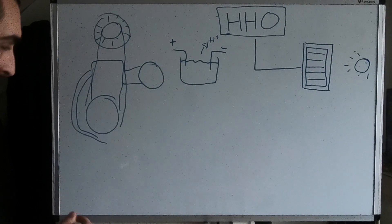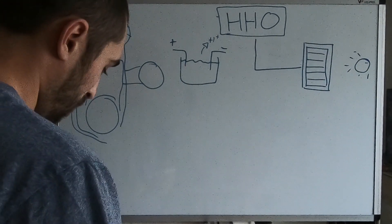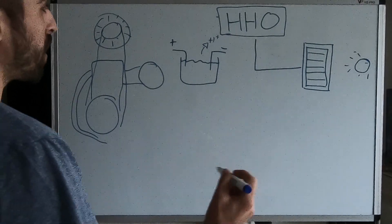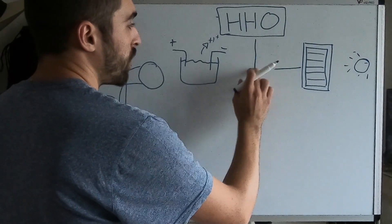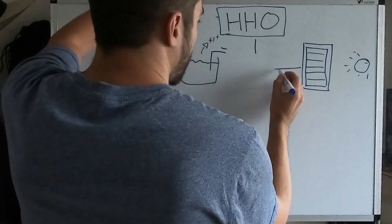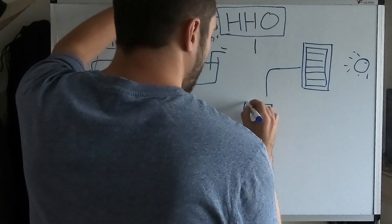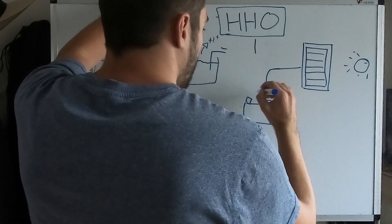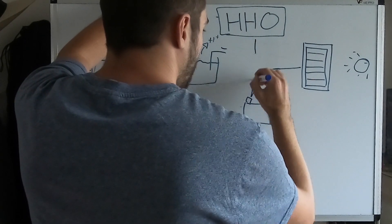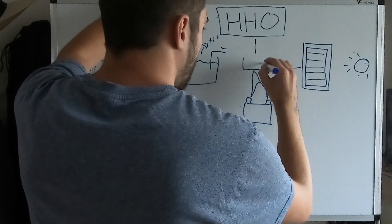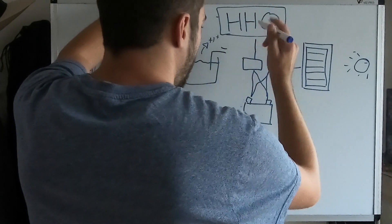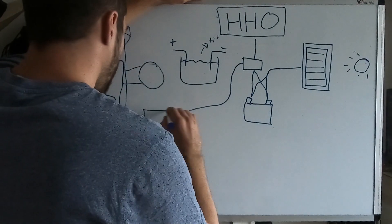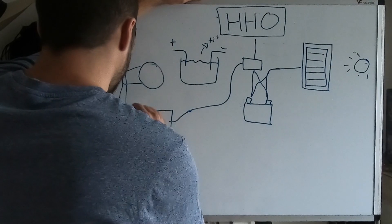This is also where our Speeduino ECU comes into play. Because it has completely reprogrammable inputs and outputs. And we can actually make a controller that sits in between here. This goes to our batteries, this goes to our controller that powers the HHO generator and has an input and output to our engine control unit.